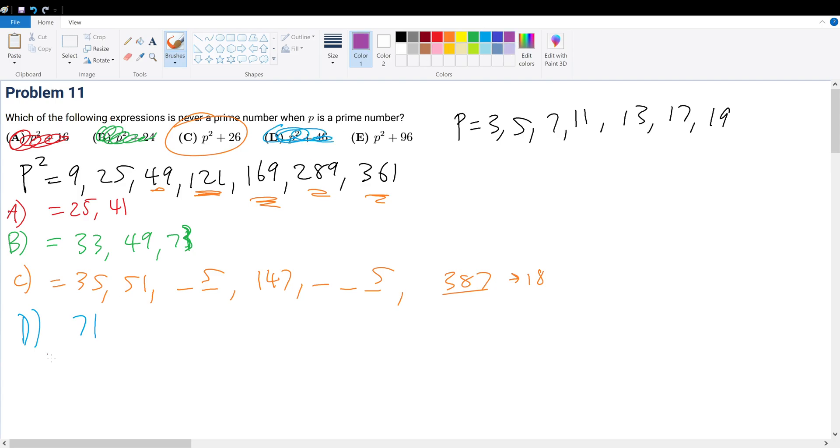What about choice E? Well, for choice E here, we'll do 9 plus that, something ends in 5. 25 plus that is 121. That's 11 squared, so that won't work. What about 49? 49 ends in 5. This is 217. 217 is divisible by 7, so that won't work. What about 169? Well, 169, something ends in 5.